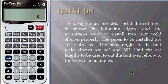The bend angles of the butt weld elbows are 68 degrees and 39 degrees. Find the arc lengths to be used to cut the butt weld elbows to the known bend angles.